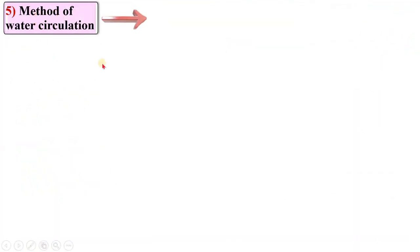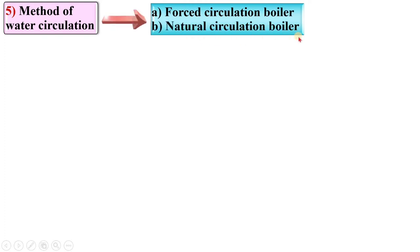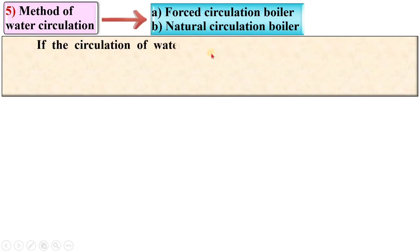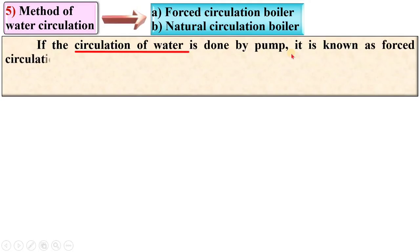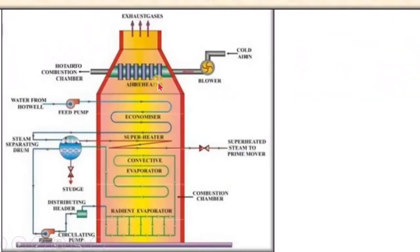According to the method of water circulation, boilers are classified as forced circulation boilers and natural circulation boilers. If the circulation of water is done by a pump or external sources, it is known as a forced circulation boiler. The example is the Lamont boiler — here you can see the circulation of water is done by the pump.